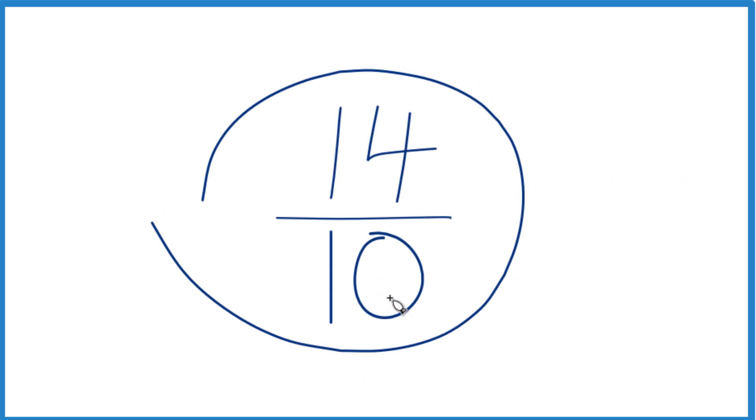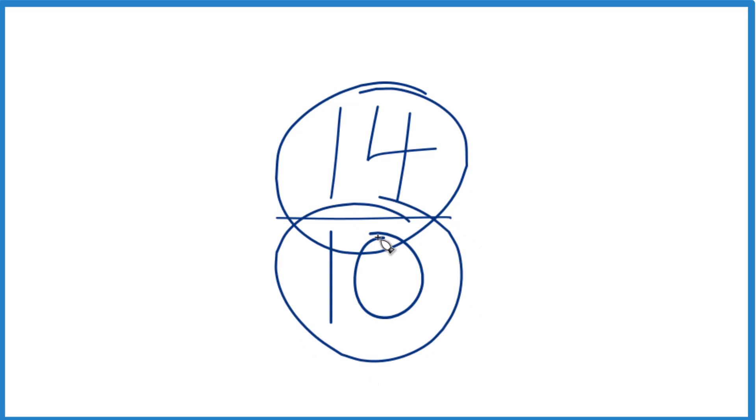Let's simplify the fraction 14/10 and then we'll also write it as a mixed number. So to simplify this, since I have an even number in the numerator and the denominator, it's probably easiest just to divide both by 2.